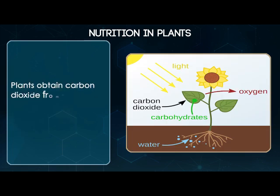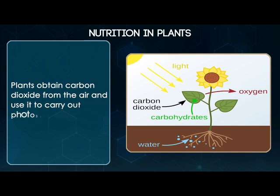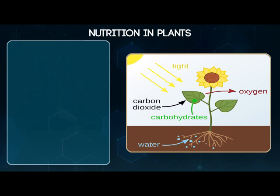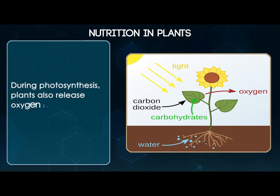Plants obtain Carbon Dioxide from the air and use it to carry out photosynthesis. During photosynthesis, plants also release oxygen into the atmosphere.